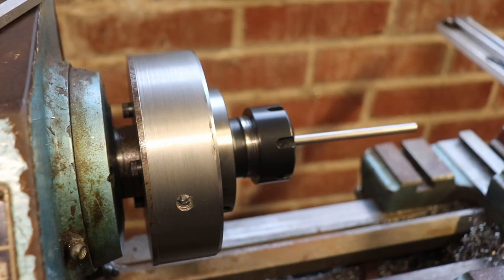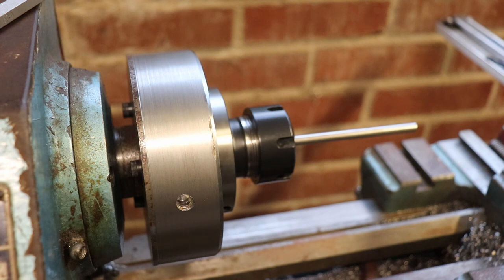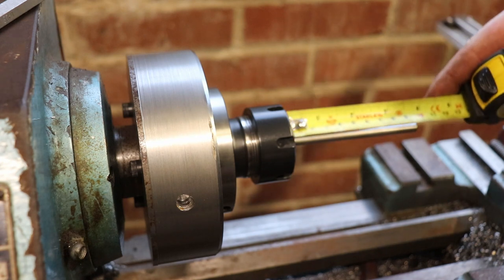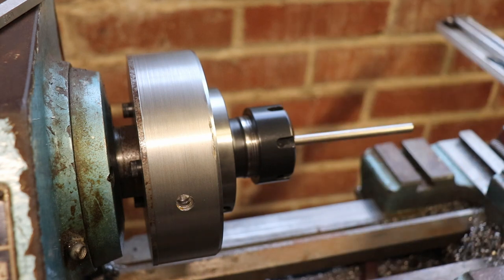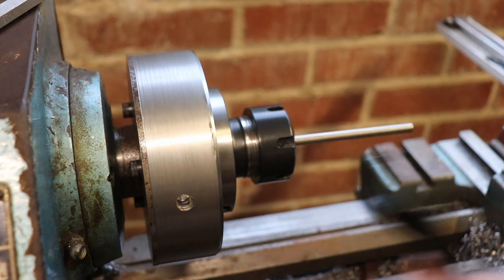Right, we've got a bit of silver steel, or drill rod as the Americans call it, hanging out the chuck. 90mm, sorry.